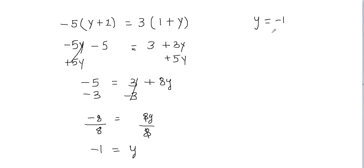To check and verify whether my answer is correct, I'll plug this value back into my equation. So y equals negative 1. In place of y, I'm going to plug in negative 1. On the left side: negative 1 plus 1 is 0, and 0 times negative 5 gives me 0. On the right side: 1 plus negative 1 is 0, and 0 times 3 gives me 0. I got 0 on both sides, which means my left hand side equals the right hand side — my answer is absolutely correct.